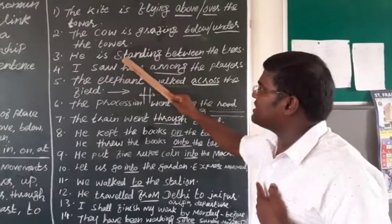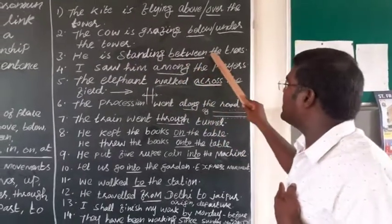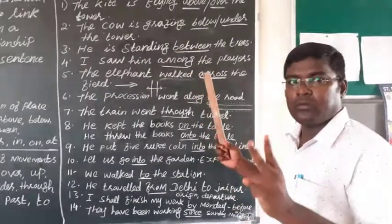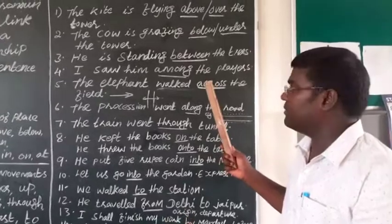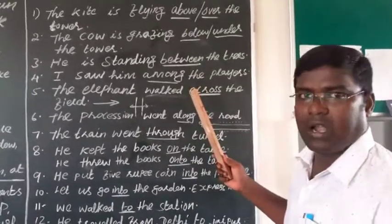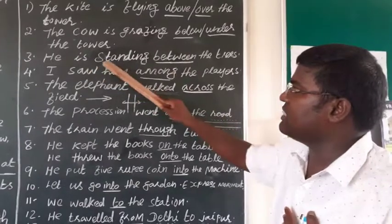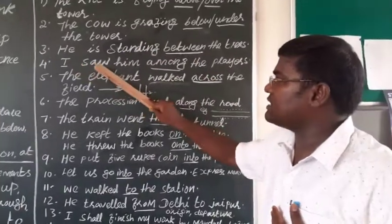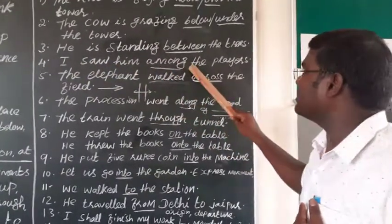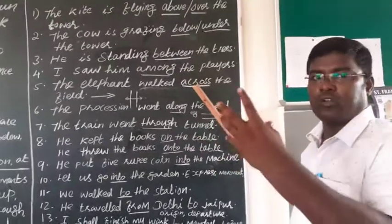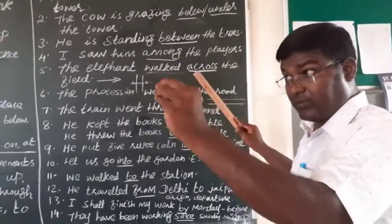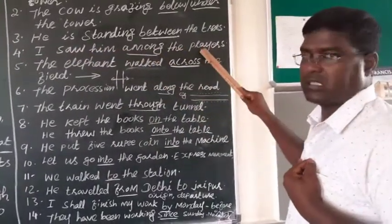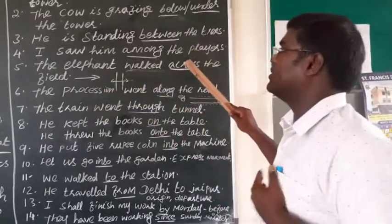Next, he is standing between the trees. Between the trees. Between is used to show between two persons. Between means one person to another, showing the between. He is standing between the trees.